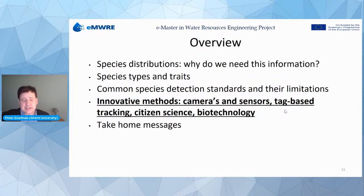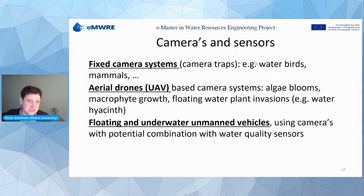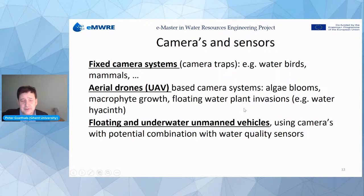New methods start with cameras and sensors. Camera traps placed above and below water can detect water birds, mammals, and fish and observe ecosystem interactions. These cameras can also be integrated into drone systems — aerial drones can detect and quantify algae blooms, monitor macrophyte growth, and detect floating invasive plant invasions like water hyacinths commonly found in Latin America, Africa, and Asia.